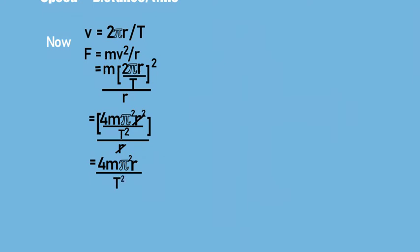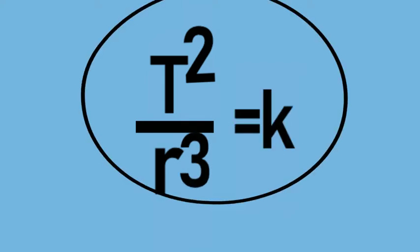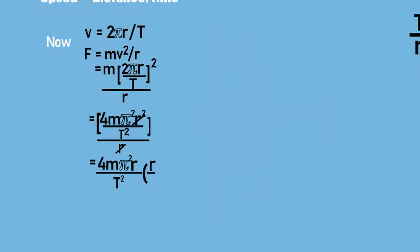Now students, this is the step where you have to use Kepler's third law. And what is Kepler's third law? Kepler's third law is T²/r³ = constant. So focus on this r³. You have to maintain r³ in your answer. So that is the reason we have to multiply and divide this solution by r².